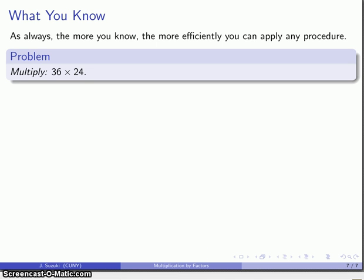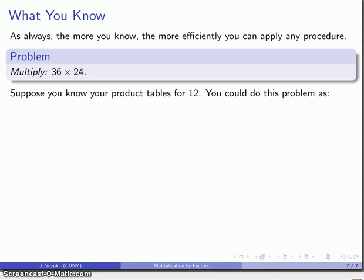As always, the more you know, the more efficiently you can apply any procedure. So here's a problem: 36 times 24. Suppose you know the product tables for 12. We could rewrite this problem. Both 36 and 24 are multiples of 12, so I could rewrite this as 3 times 12 times 12 times 2. Multiplication is both associative and commutative, which means I can rewrite this in any order that I want to. I know my multiplication tables for 12: 12 times 12 is 144.